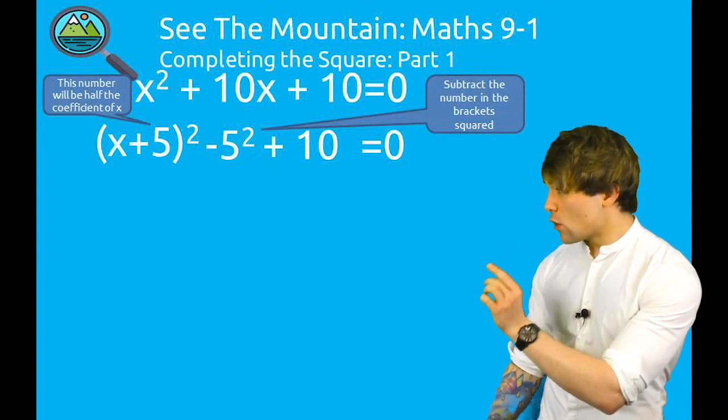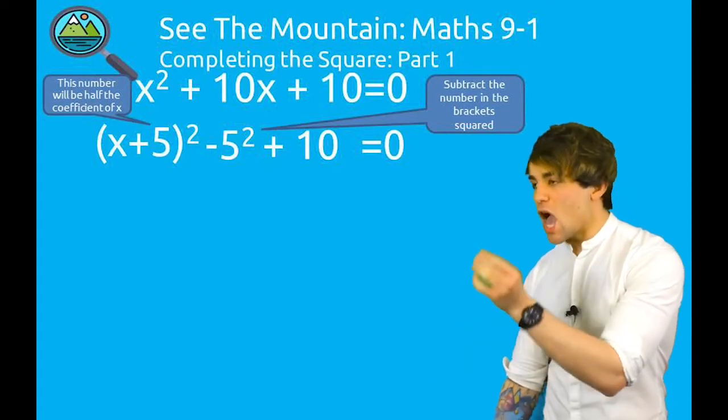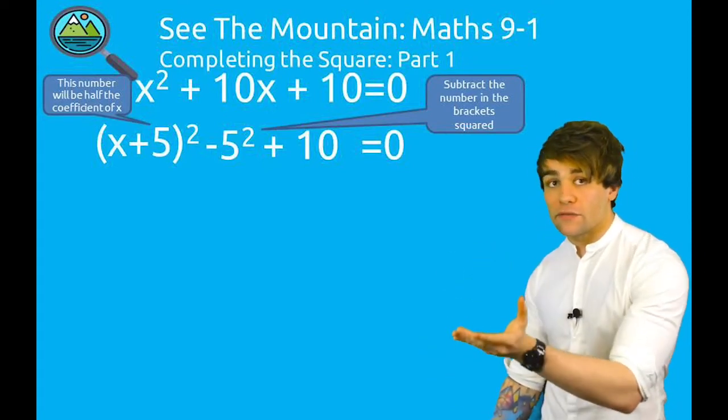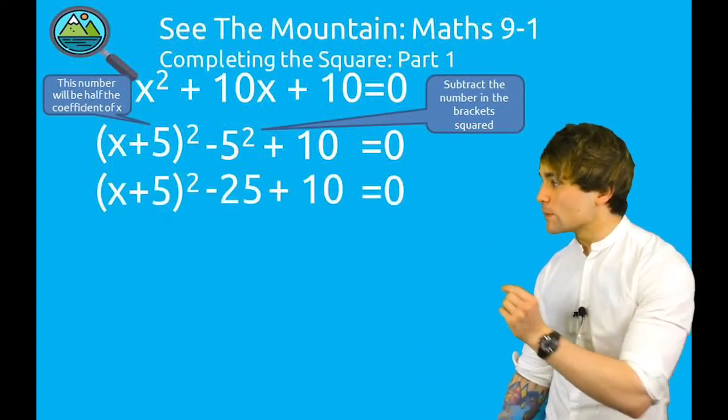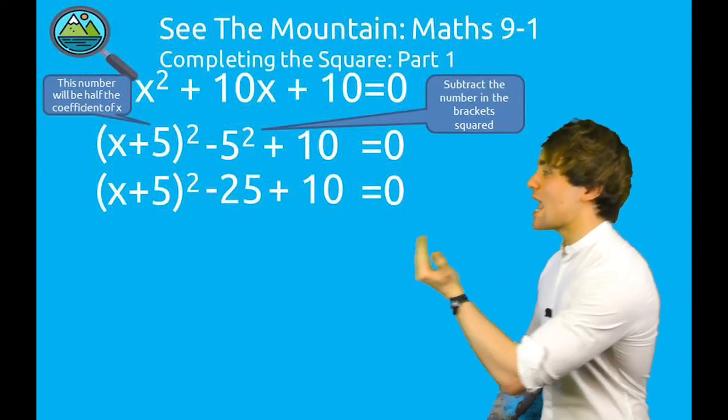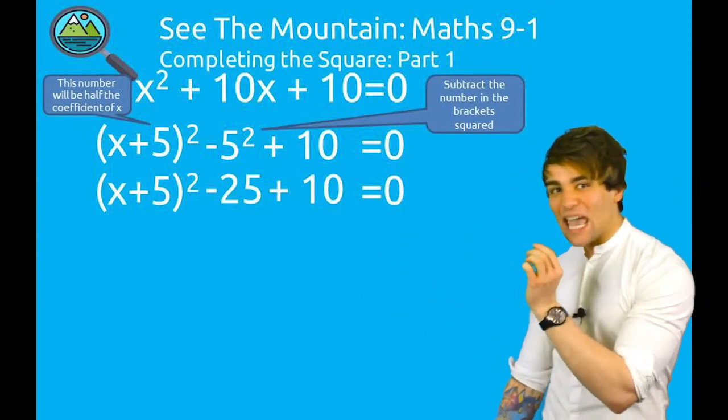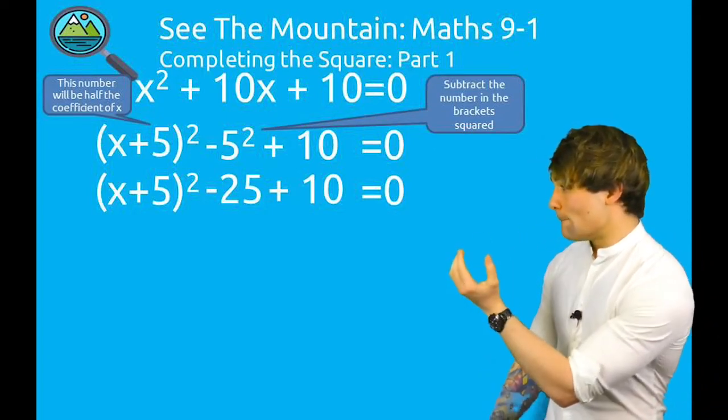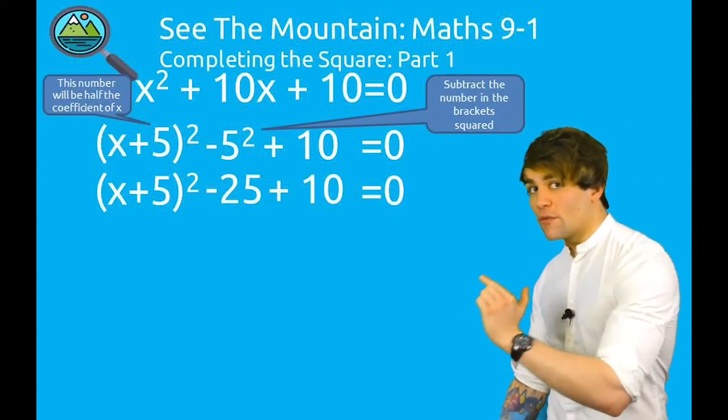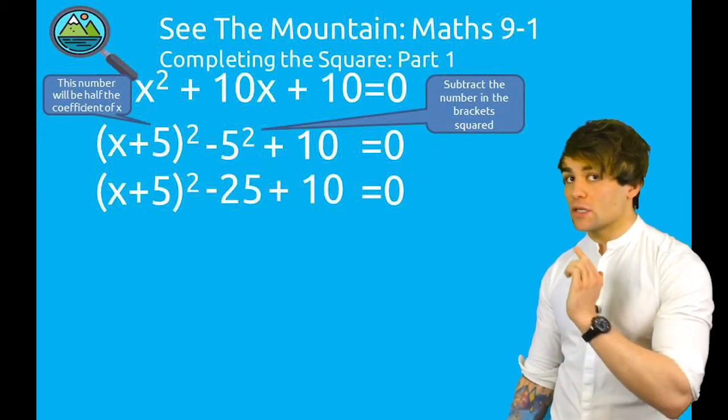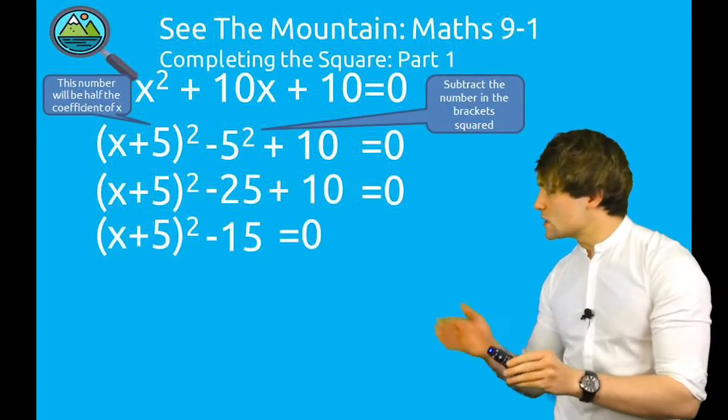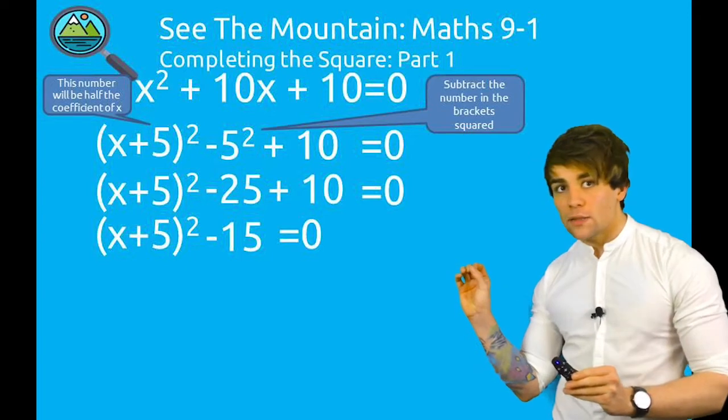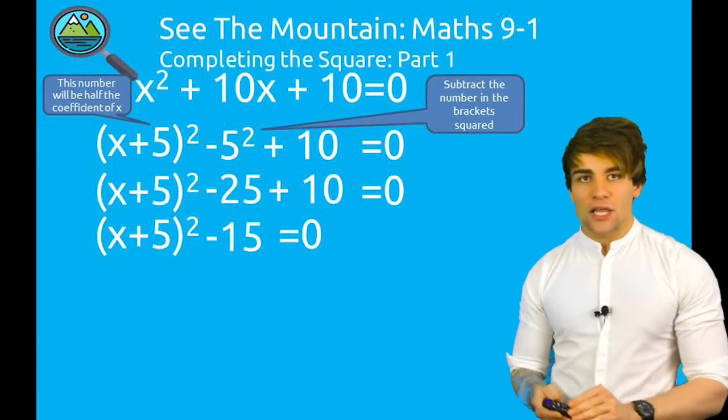Now because we've got a 5 squared inside the brackets, a 25 because of 5 squared is going to come out. You can see here, I've now taken away 5² to get rid of that 25 coming out of those brackets. So -25 from the +10 gives us -15. So you can see (x + 5)² - 15 = 0.